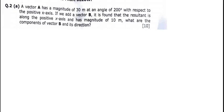Let's talk about vectors. Vector A has a magnitude of 30 meters at an angle of 200 degrees with respect to the positive x-axis. If we add a vector B, it is found that the resultant is along the positive x-axis and has a magnitude of 10 meters. What are the components of vector B and its direction?